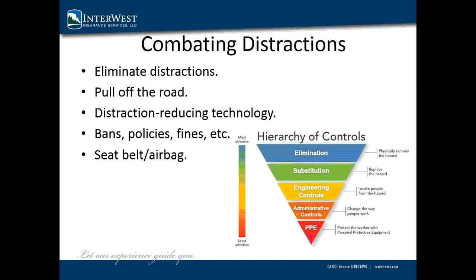The next step down is substitution, which replaces a hazard with something else — in this case, that could mean pulling off of the road to stop and change destinations on your GPS, send a text or email, or grab a quick bite to eat. Under that are engineering controls, which are physical barriers to the hazard, including apps that automatically respond to texts and phone calls and securing loose objects inside of the vehicle. Next, we have administrative controls, which change the way people work with the hazard — most commonly company policies banning cell phone use, hands-free laws, and fines. Lastly, personal protective equipment, or PPE, is a last resort where a level of risk has been accepted, and the only option is to reduce injury — in this case, a seatbelt and airbags.